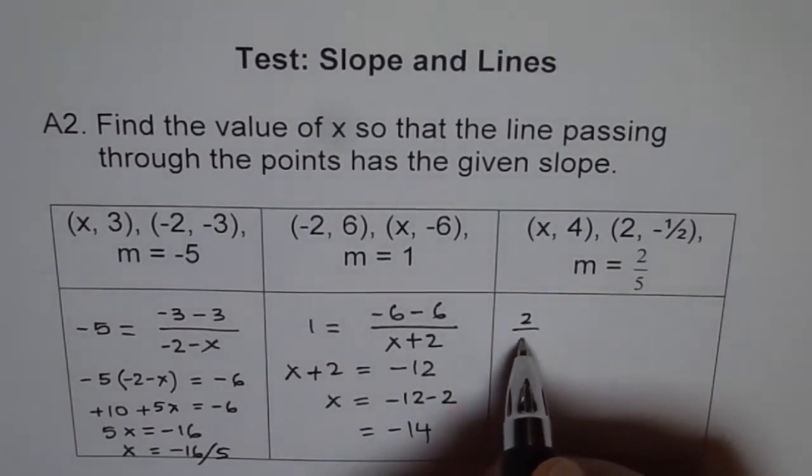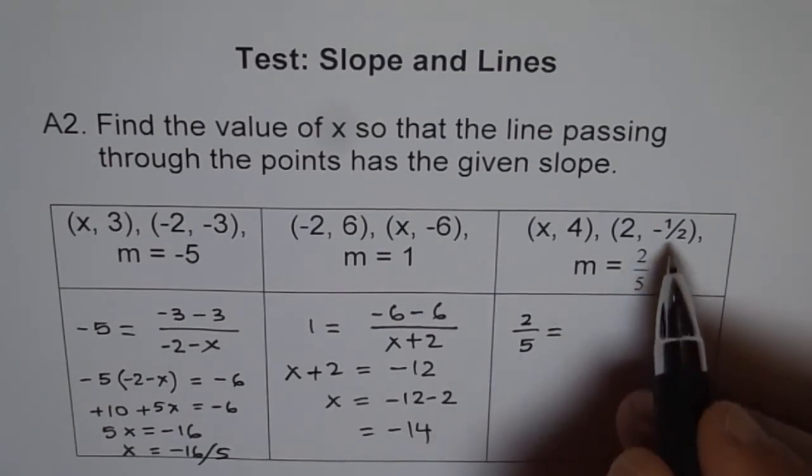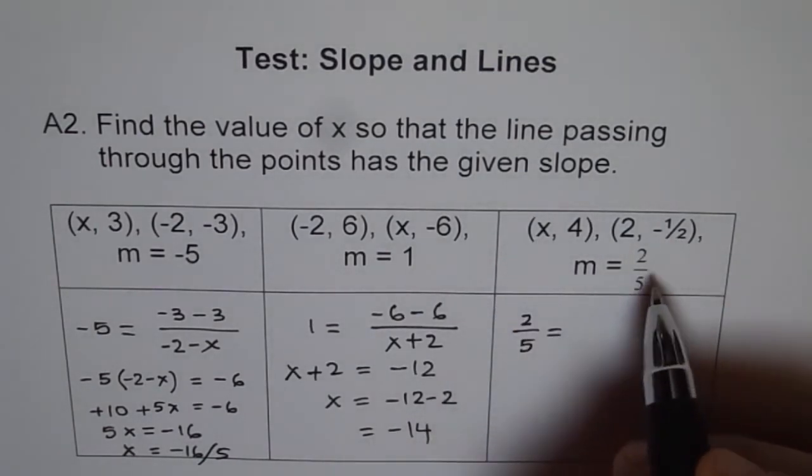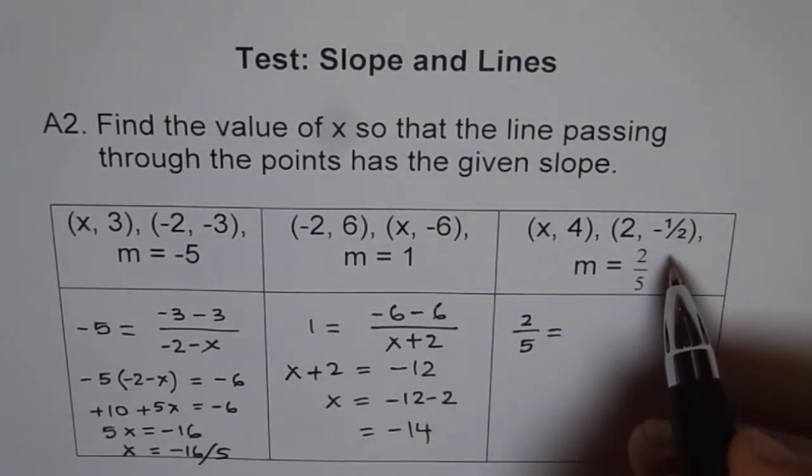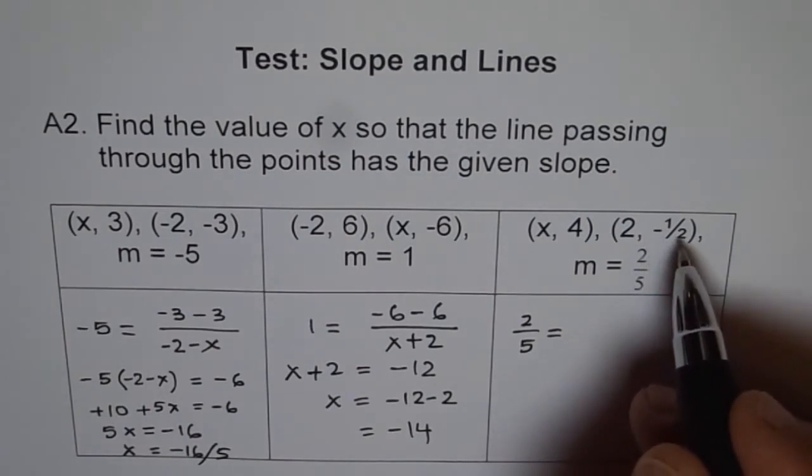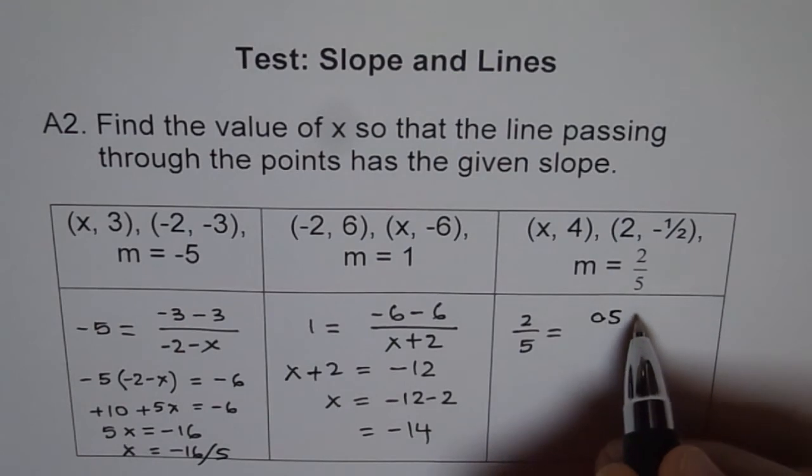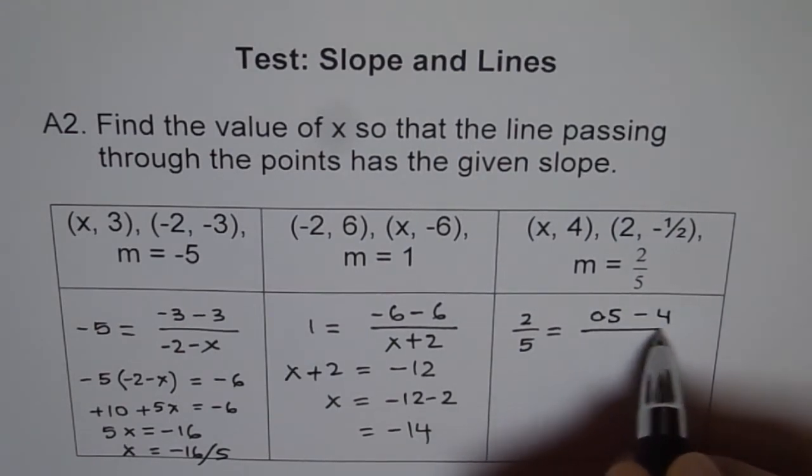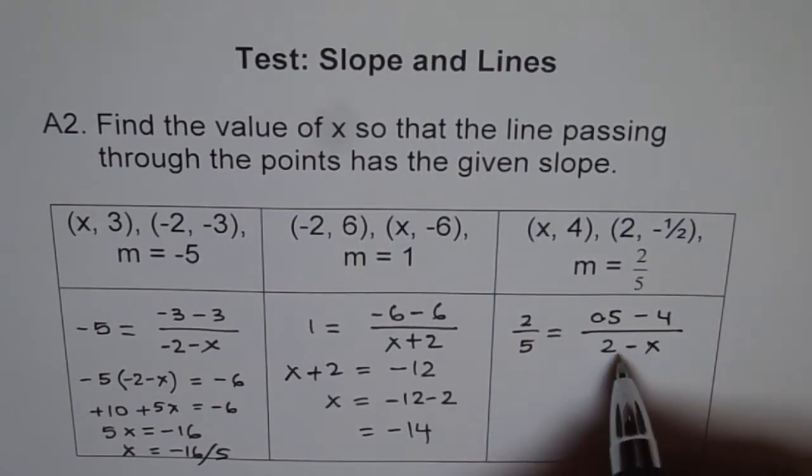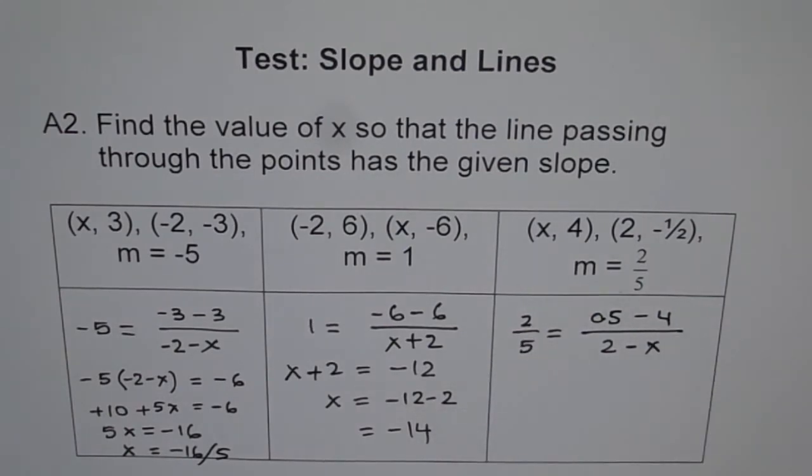For this one, 2 over 5 equals y2 minus y1. Sometimes you have difficulty doing fractions; you can write 0.5 here in that case. So 0.5 minus 4 divided by 2 minus x. Cross multiply and solve for x.